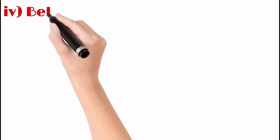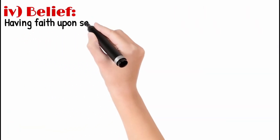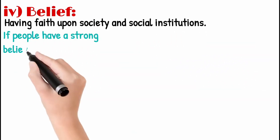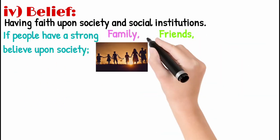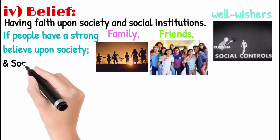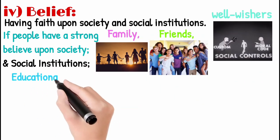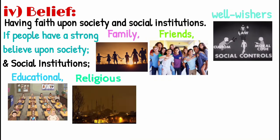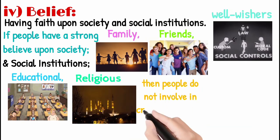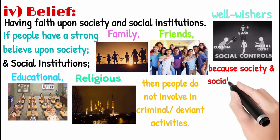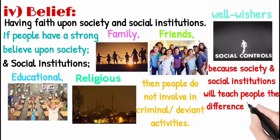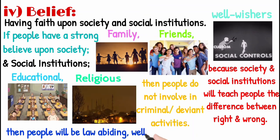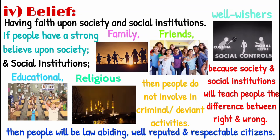Number four: Belief — having faith in society and social institutions. If people have a strong belief in society — that is, family, friends, well-wishers, and social institutions such as educational institutions and religious institutions — then they will not be involved in criminality. Because society and social institutions help people understand the difference between right and wrong, and people then start following laws and become respectable citizens.